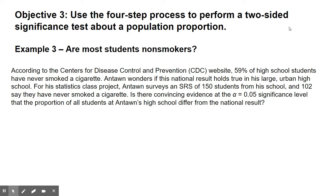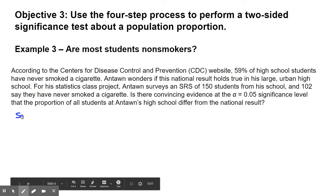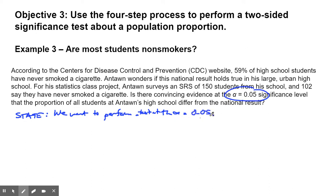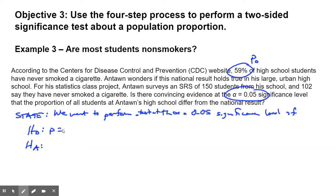So we want to perform a test at the alpha equals 0.05 significance level. Assume it's 0.05 unless they tell you otherwise. Now we state our two hypotheses. For the null, P equals 0.59 — that looks like our null value.